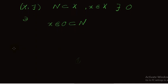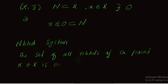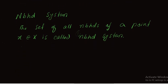Now we discuss neighborhood system. Neighborhood, in short, we can write it as NBHD. The neighborhood system is the set of all neighborhoods of a point. Suppose we have a point x; then the set of all neighborhoods of the point x belonging to the ground set X is called the neighborhood system, and it is denoted by N(x). So N(x) is the set of all neighborhoods of a point x.